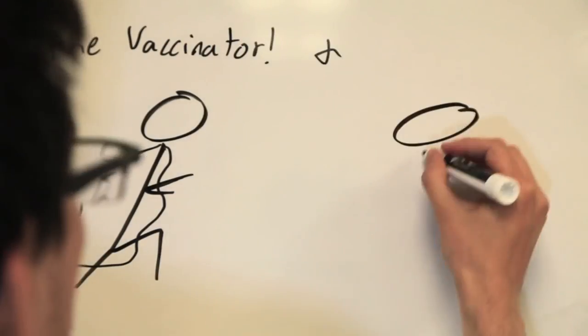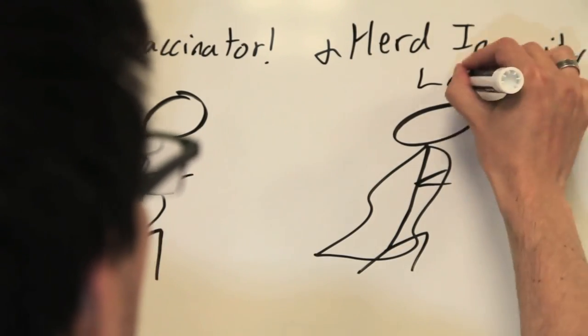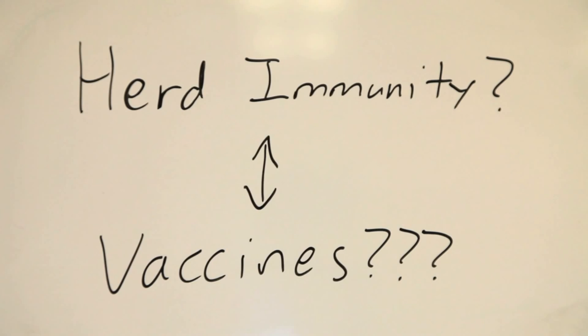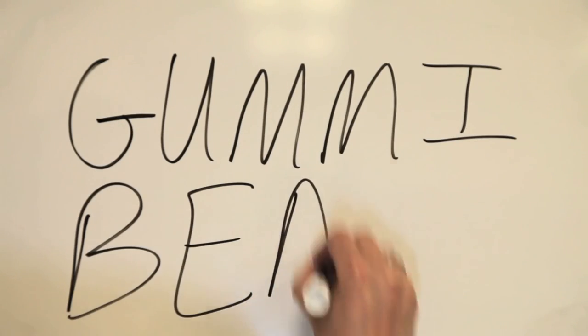And the reason that they are rather rare, if not eradicated entirely in the case of smallpox, is because of vaccines and the power of herd immunity. But what is herd immunity and how do vaccines figure into it? Let's answer these questions using gummy bears.